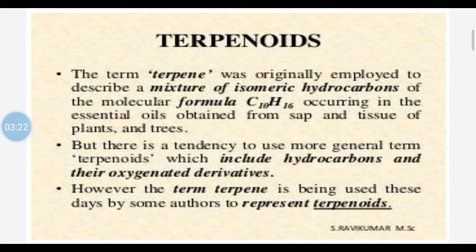The term terpene is being used these days by most authors to represent terpenoids, so interchangeably both terms can be used — either terpenes or terpenoids. When we cover drugs, for example carminatives which are mostly containing volatile oil as the main chemical constituent, in their chemical constituents they contain important terpenes. So volatile oil always contains terpenes, and that is what we are covering in this session.